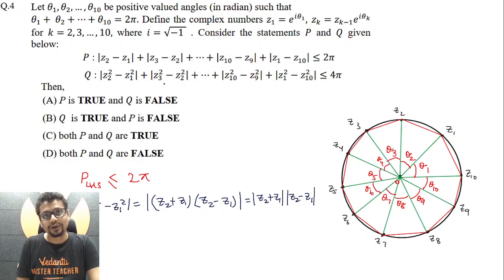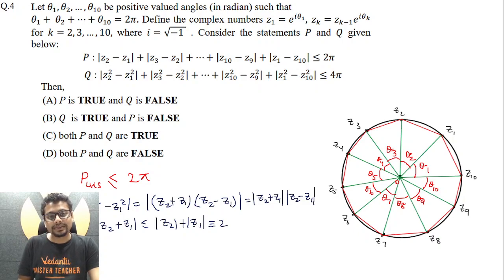Similarly, mod Z3 plus Z2 would be coming in multiplication with mod Z3 minus Z2 in the second term, so and so forth. And if you see carefully, mod Z2 plus Z1 using triangular inequality would be less than equal to mod Z2 plus mod Z1. So mod Z2 plus Z1 will be less than equal to mod Z2 plus mod Z1, which essentially is 2. So that means this is less than equal to 2. Similarly, you can say mod Z3 plus Z2 would be less than equal to 2, so and so forth. Mod Z10 plus Z9 less than equal to 2. Similarly, mod of Z1 plus Z10 would be less than equal to 2.